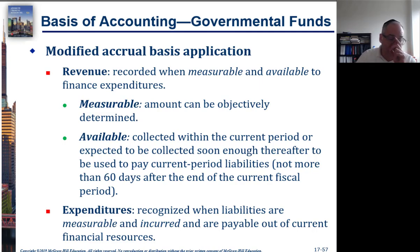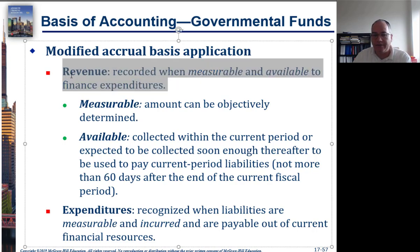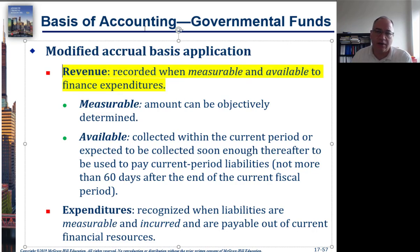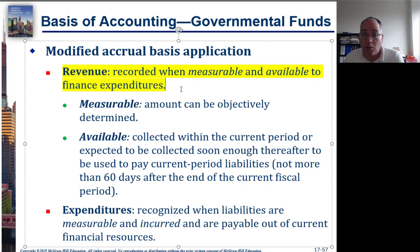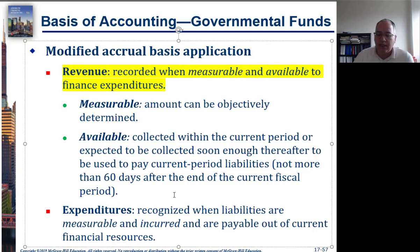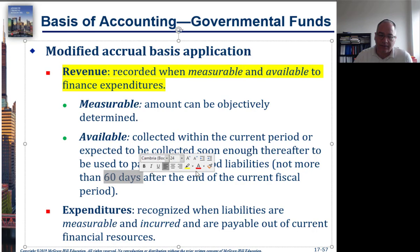Here are the key details of modified accrual. Revenue is recorded when it is measurable and available to finance expenditures. Measurable means you can objectively determine the amount. Available means it's going to be collected this period or is expected to be available to pay current period liabilities — and that means within 60 days after the end of the year. This 60-day rule is extremely important.